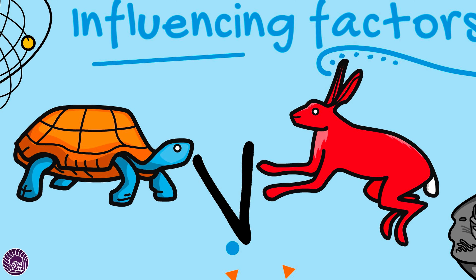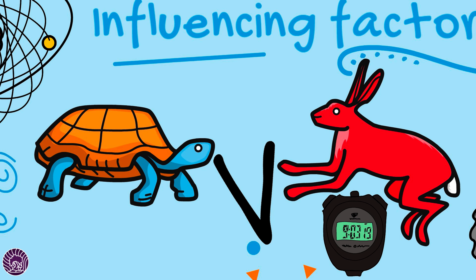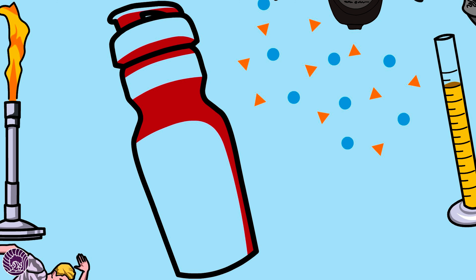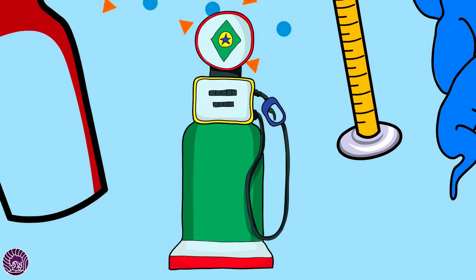The net gain for a molecule of glucose moving through glycolysis is two ATP molecules, because we spend two near the beginning and create four later at steps seven and ten. If we're using glycogen, remember that it skips the first step and enters at step two. Step one loses an ATP, so when we use glycogen directly we get a net three ATPs — we only break down one ATP and create four, giving a net gain of three.